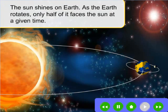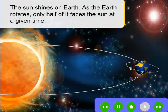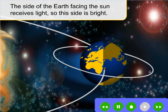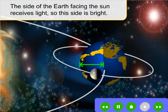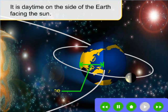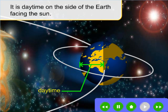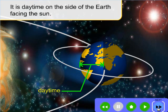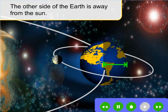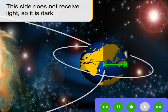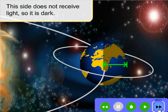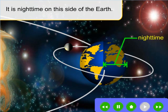The sun shines on Earth. As the Earth rotates, only half of it faces the sun at a given time. The side of the Earth facing the sun receives light, so this side is bright. It is daytime on the side of the Earth facing the sun. The other side of the Earth is away from the sun. This side does not receive light, so it is dark. It is nighttime on this side of the Earth.